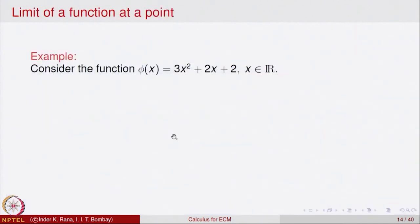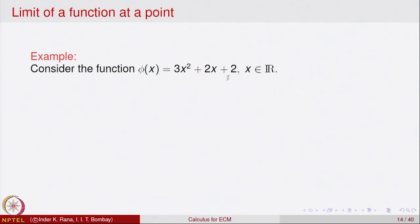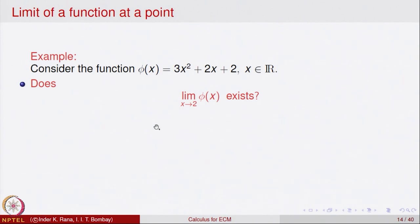Let us look at an example. Consider the function phi(x) = 3x² + 2x + 2 for x belonging to R. We want to find the limit as x goes to 2. We can think of this as a sum of three functions. To do that, let us break phi into three parts: f₁(x) = 3x², f₂(x) = 2x, and f₃(x) = 2 (the constant function). So phi = f₁ + f₂ + f₃.